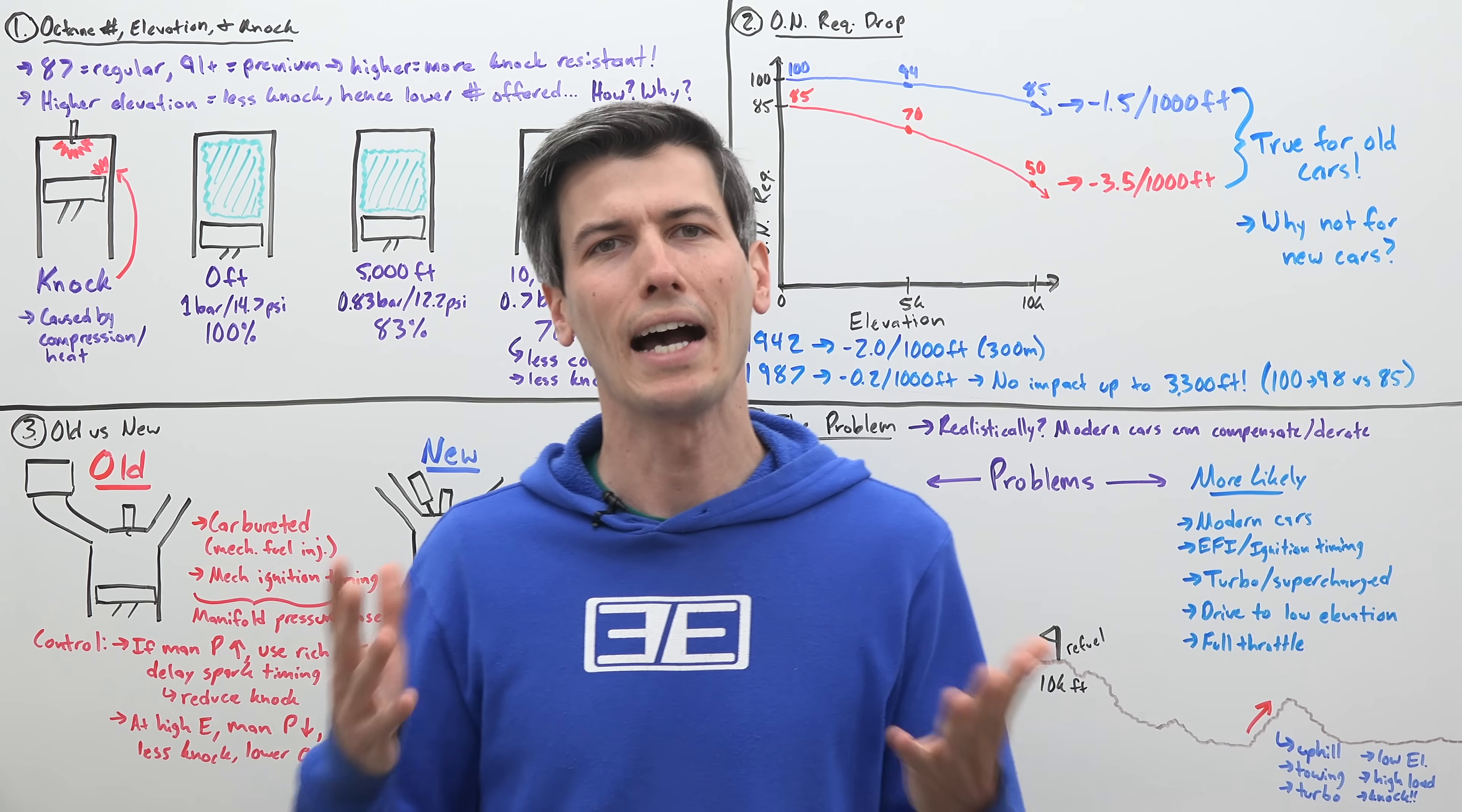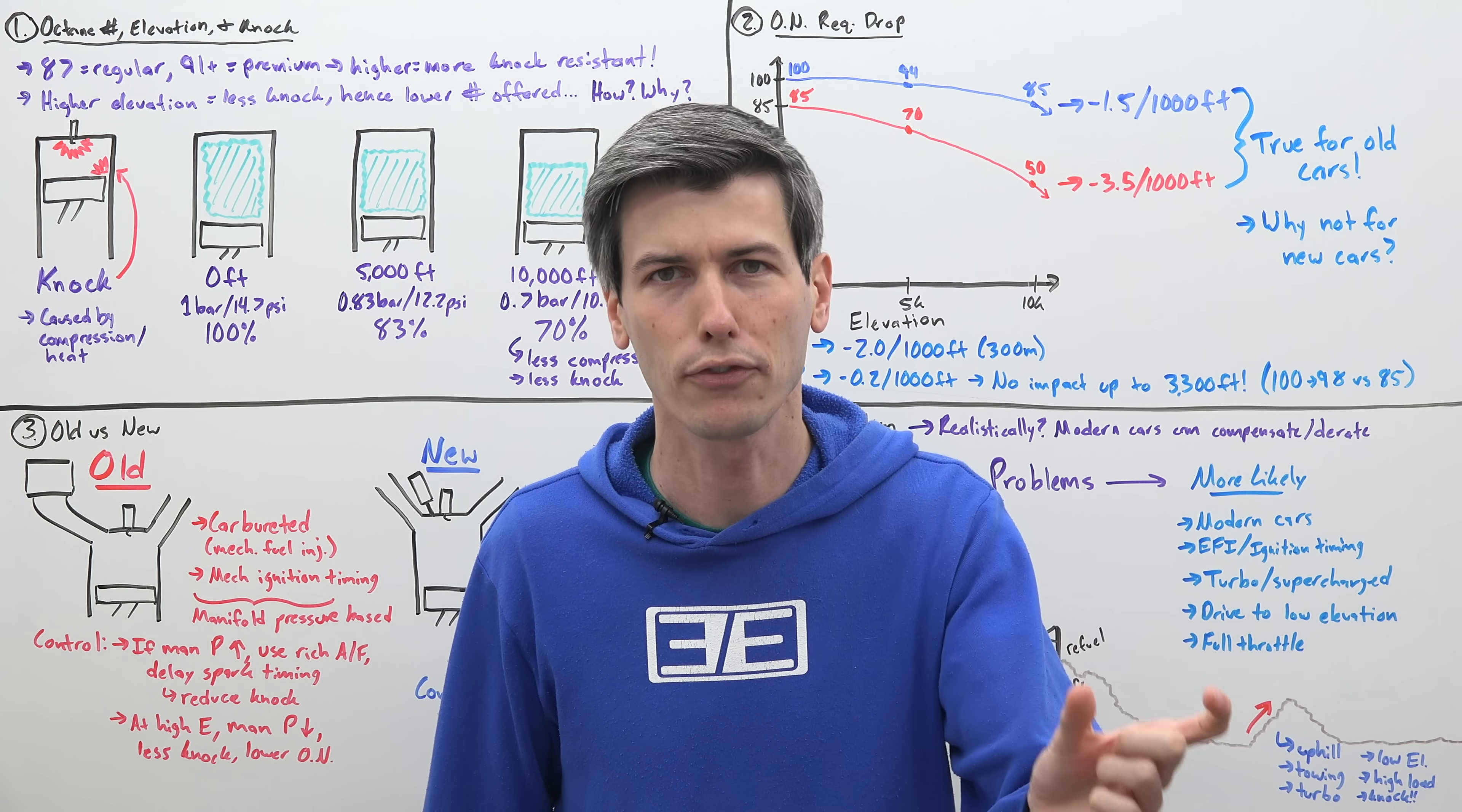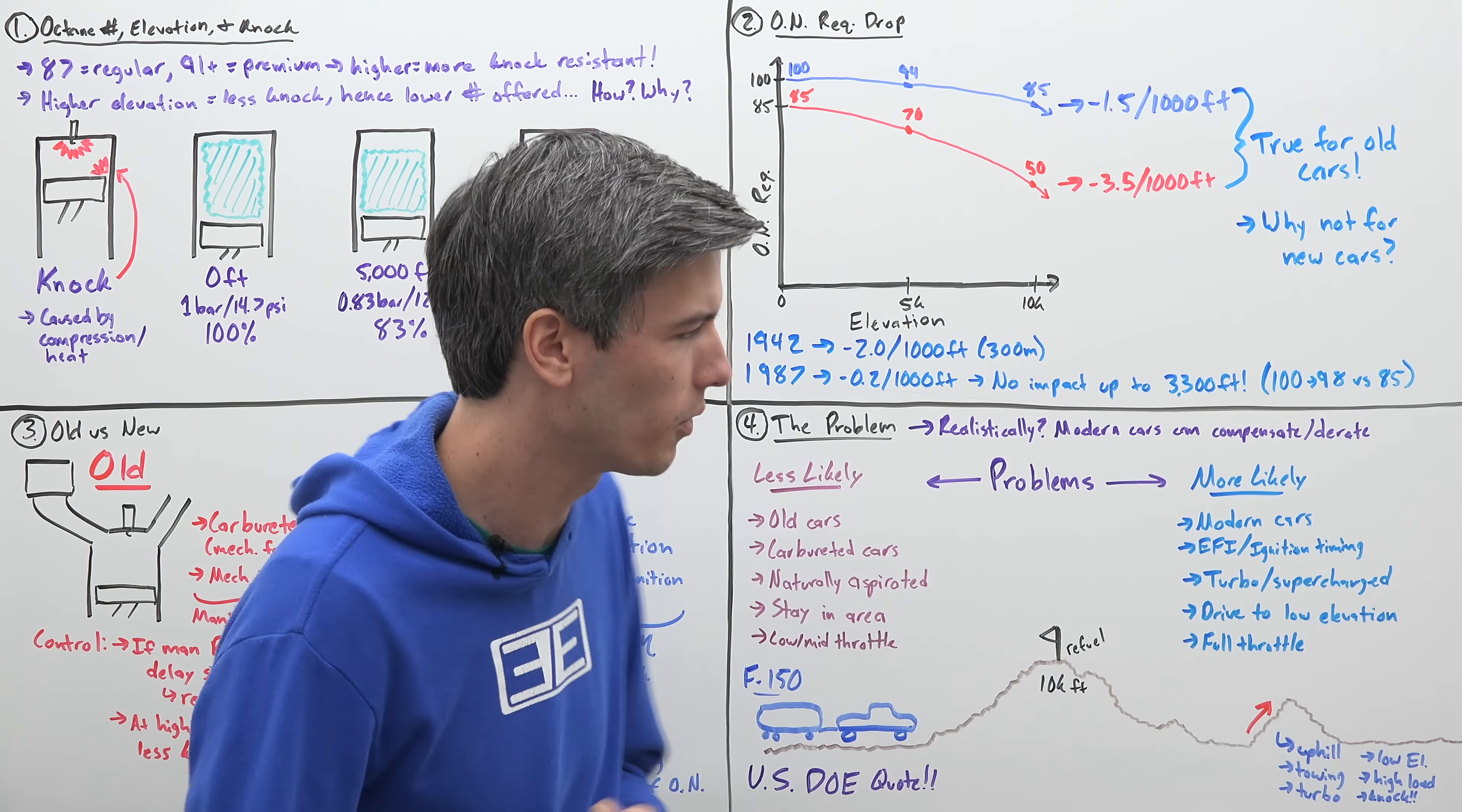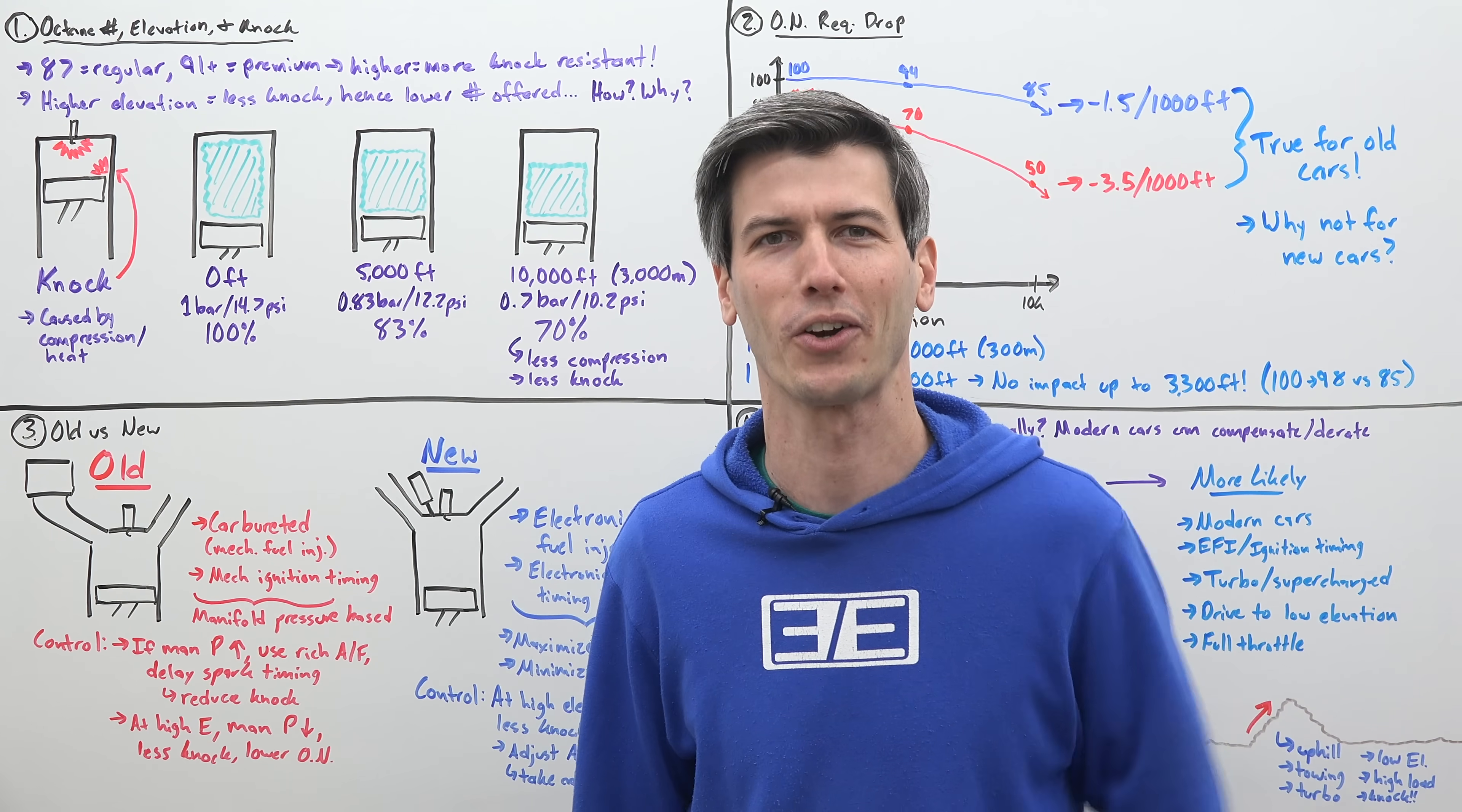If you've driven through a high elevation state like Wyoming, you may see listed as regular gas the number 85 rather than 87. And it's that number 85 or 86 that becomes problematic. So why does this happen and what does all of this mean? Our final conclusion is pretty crazy and it's pretty wild that this is actually occurring.